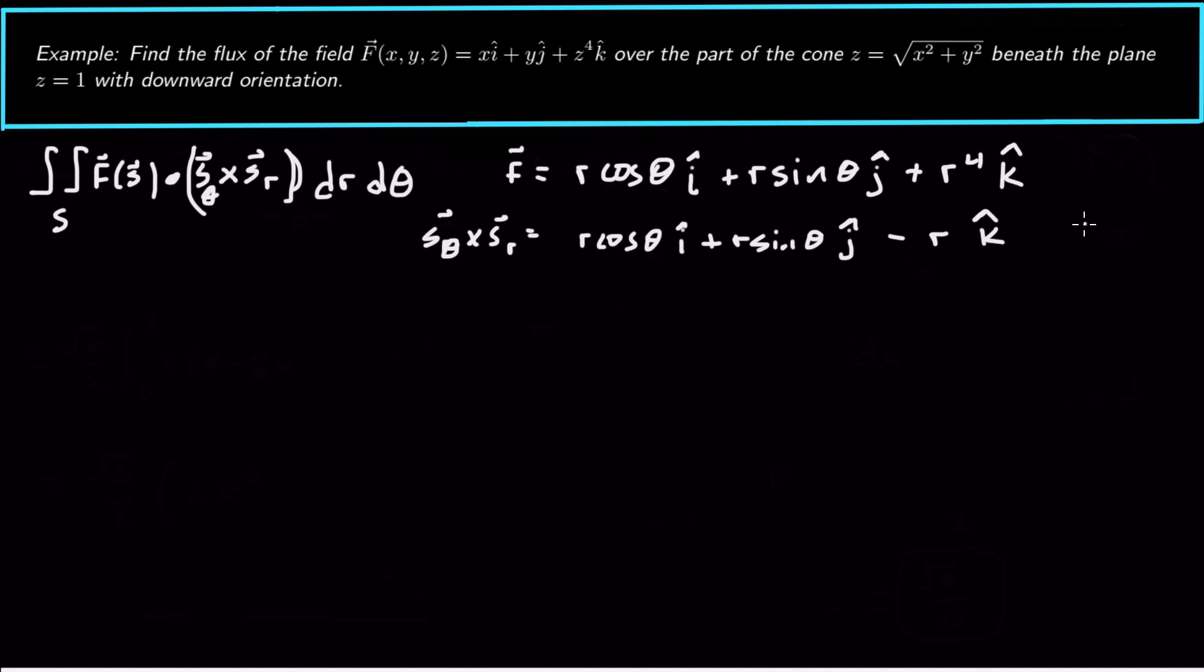So we've got the integral of the dot product of these two. So we're going to have integral 0 to 2 pi for theta, integral 0 to 1 for r. And dot product of these two, this can be r squared cosine squared theta plus r squared sine squared theta minus r to the 5th and then dr d theta. This can be simplified to the integral 0 to 2 pi, integral 0 to 1, r squared minus r to the 5th, dr d theta.